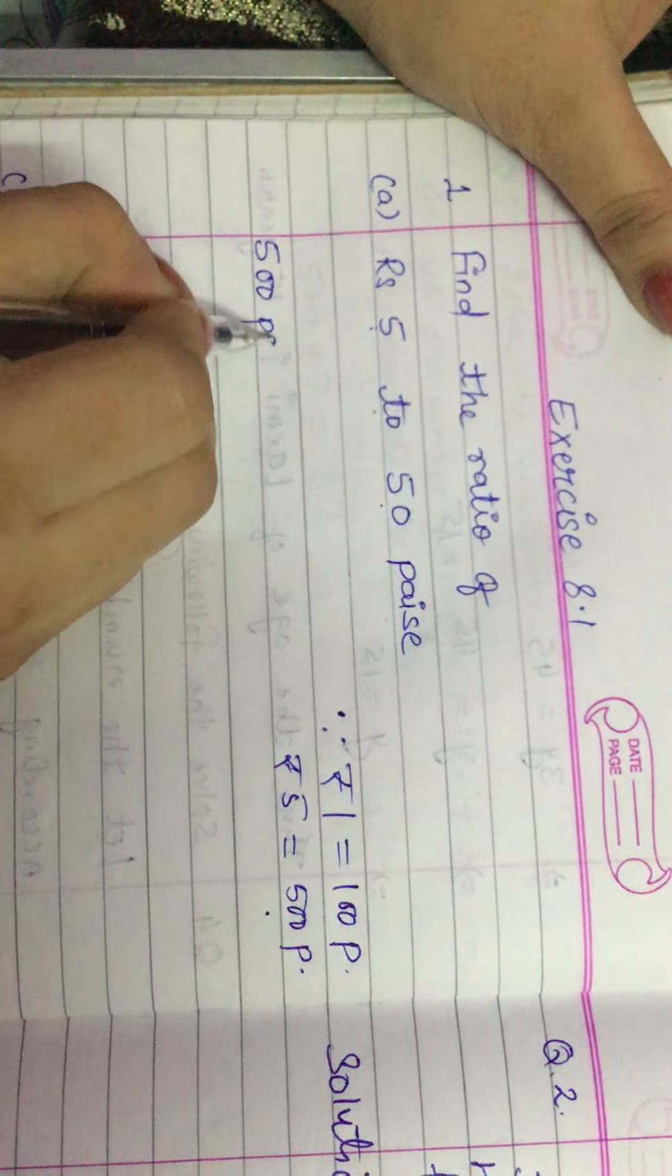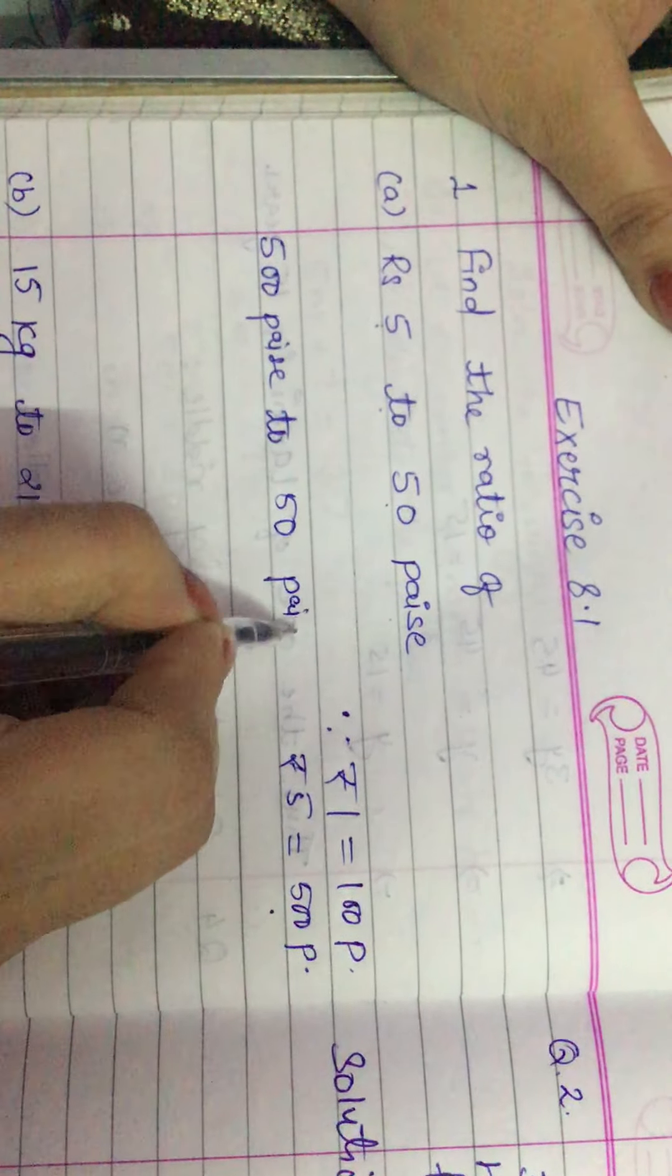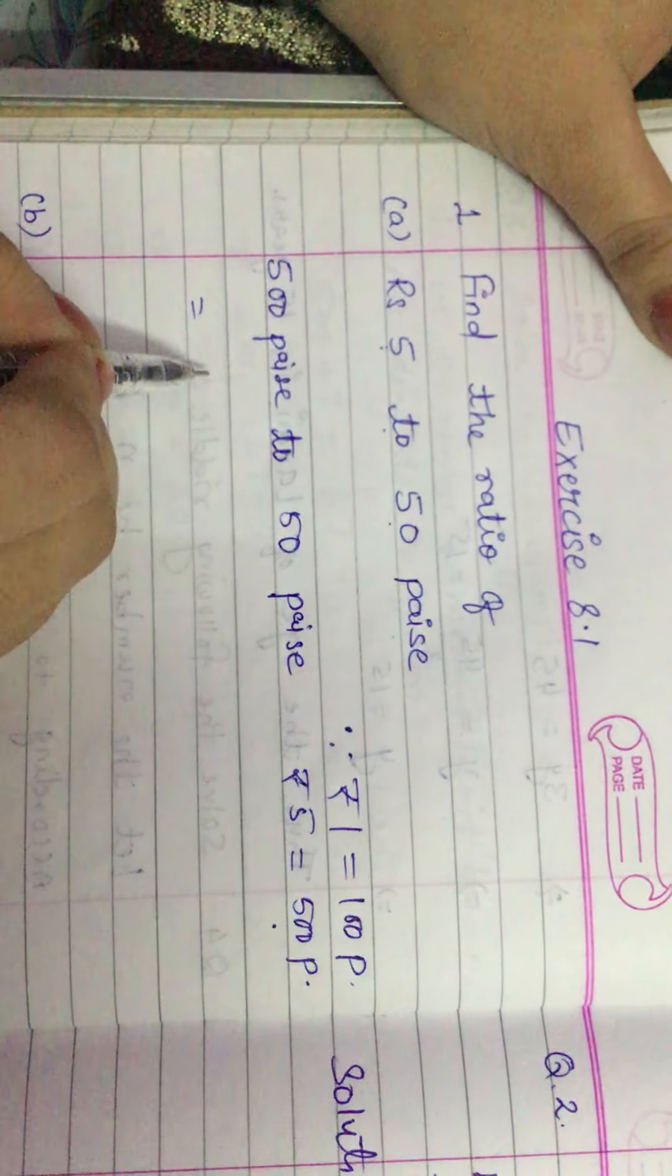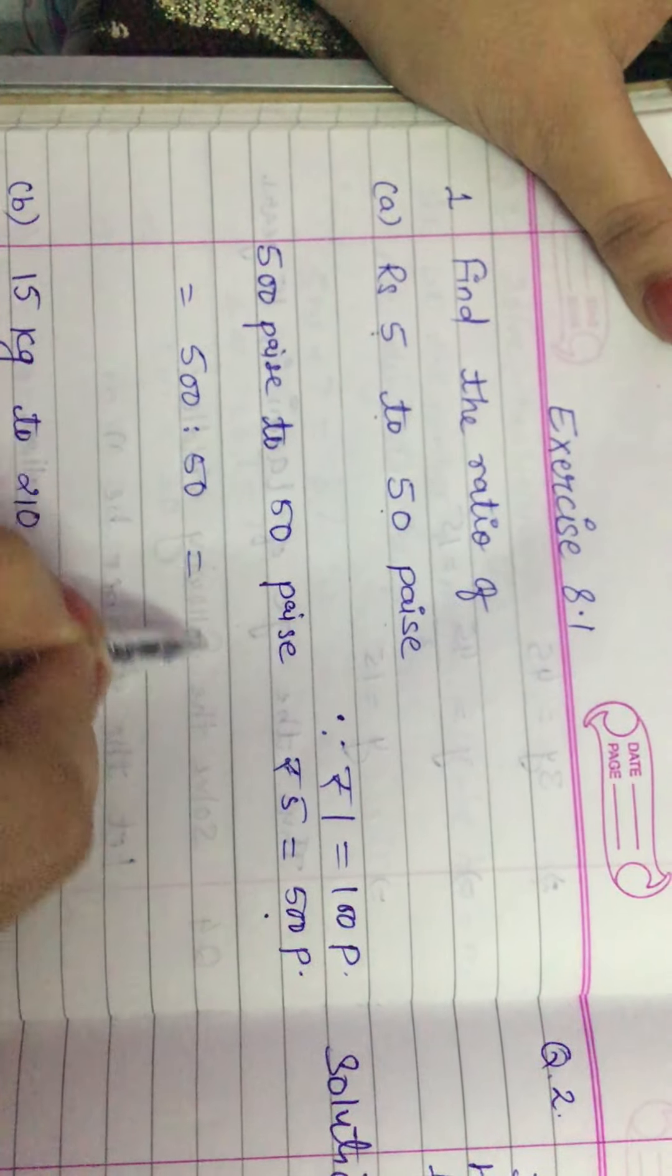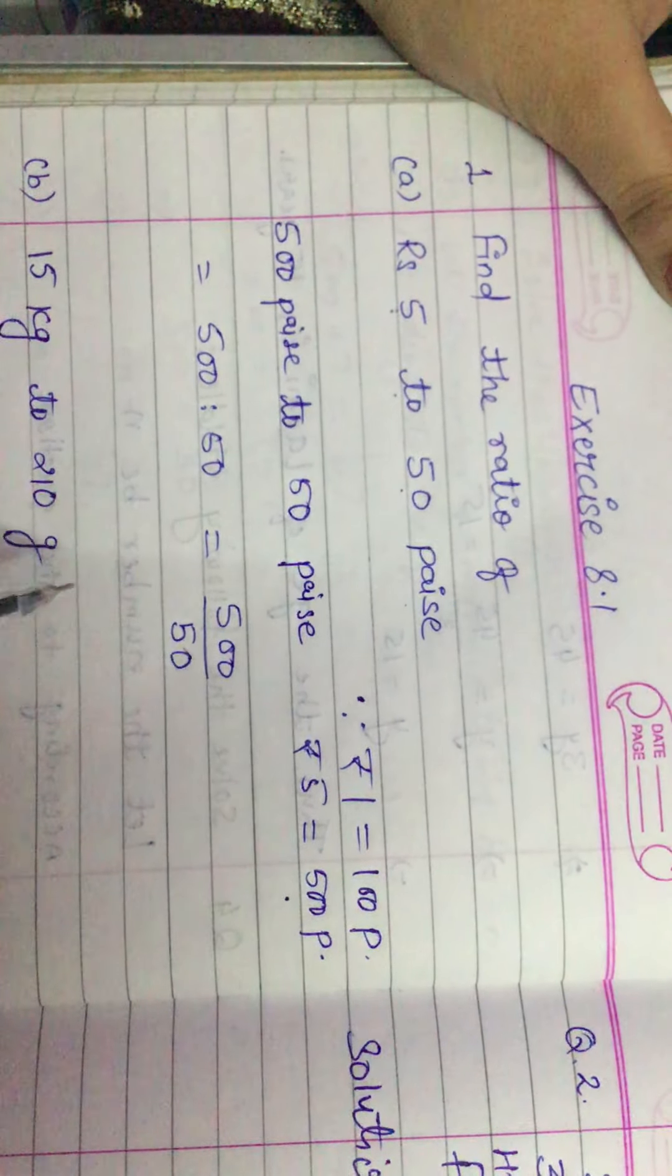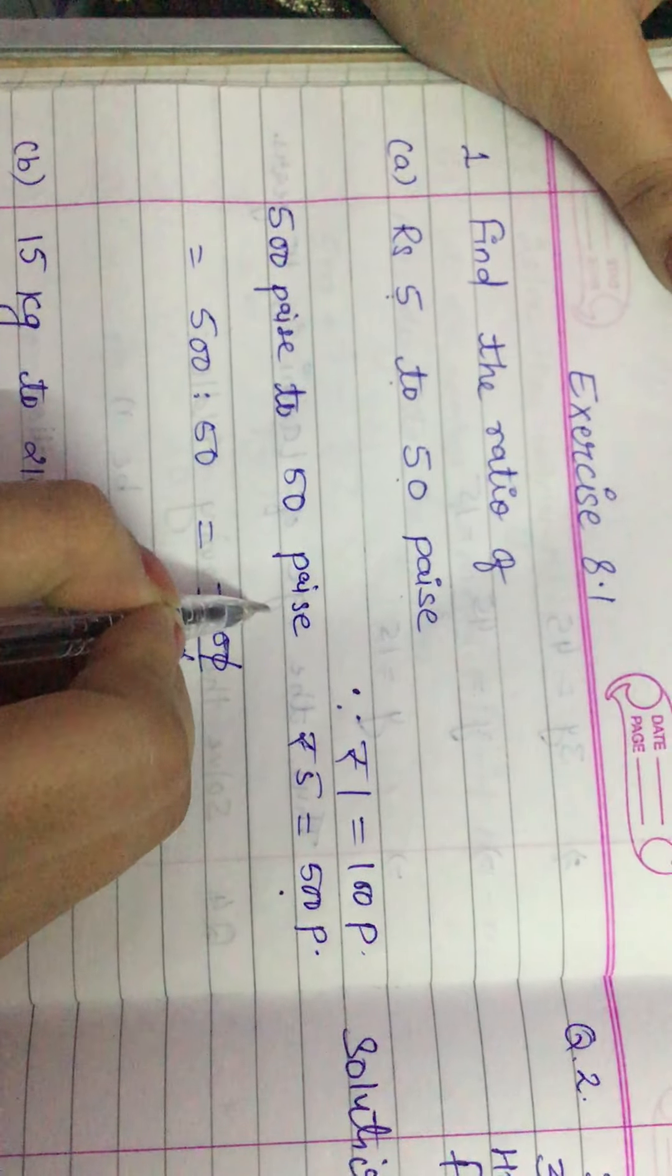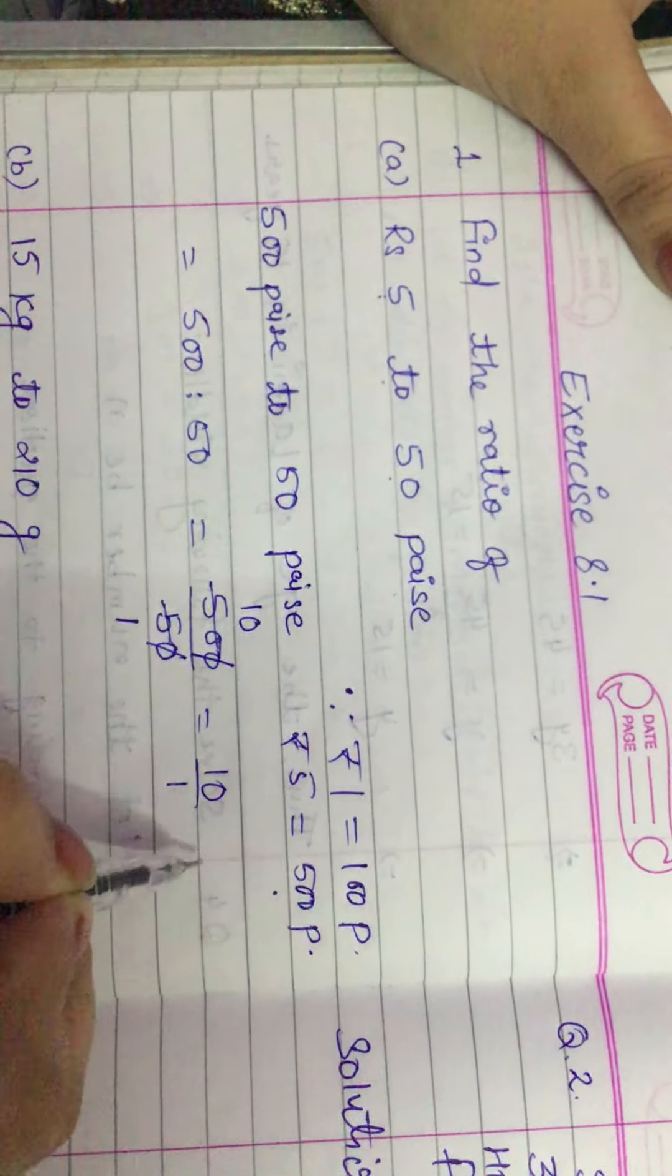So 500 paisa to 50 paisa. Now we can find the ratio of 500 paisa to 50 paisa. We know that we can write in fraction and solve it. So 0, 0 cancel - 5, 1, and 0. Then 10 by 1.